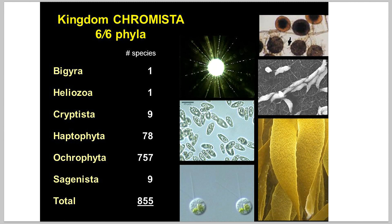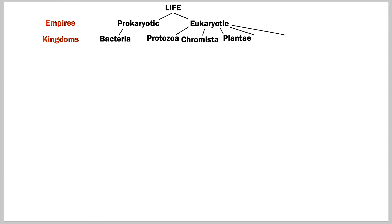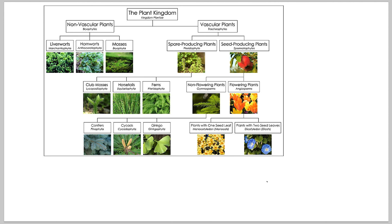In the chromista kingdom things start to get more complex and larger in size. The next kingdom is plantae — the plant kingdom. Plants divide into seed-producing and non-seed-producing plants, non-vascular and vascular plants. We have simple plants such as mosses, then ferns, and up to trees and herbs.